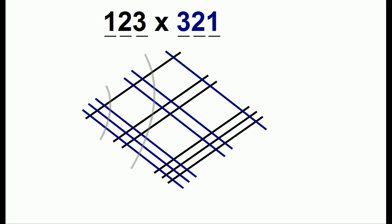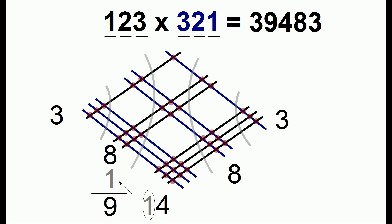We again group the lines. We have three dots here. Eight dots here. Fourteen. Eight. And three. Once again, we're going to have to carry this one over. So that's our answer. It'll be 39,483.